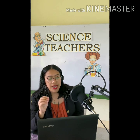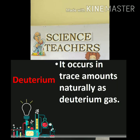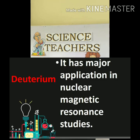The next isotope of hydrogen is deuterium. Deuterium is a hydrogen isotope consisting of one proton, one neutron, and one electron. It occurs in trace amounts naturally as deuterium gas. It has major application in nuclear magnetic resonance (NMR) studies.